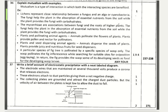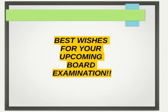The 37th question: write a brief account of the electrostatic precipitator with a neat labelled diagram. The diagram earns two marks with about five labellings. Electrode wires maintained at several thousand volts produce a corona that releases electrons. These electrons attach to dust particles giving them a net negative charge. The collecting plates are grounded and attract the charged dust particles. The velocity of air between the plates is kept low so that the dust falls.